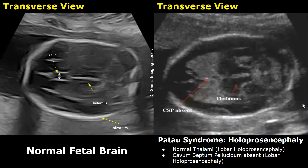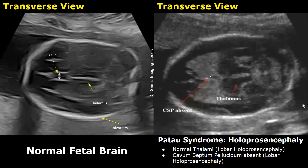The third type is lobar holoprosencephaly. It is the least severe type. The thalami will be normal in this type. The falx cerebri is present and the thalami are seen on either side of the falx in this image. But the cavum septum pellucidum is absent. The cavum septum pellucidum will normally appear as a hypoechoic or anechoic fluid-filled, somewhat rectangular-shaped structure anterior to the thalami. But in this image it is absent — we do not see a hypoechoic fluid-filled structure anterior to the thalami.